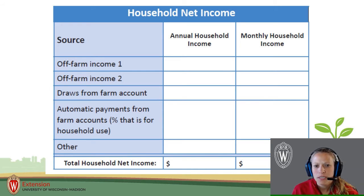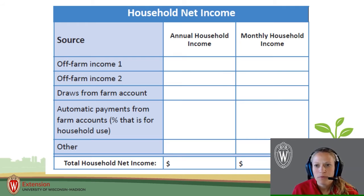Is there off-farm income that you are or will be receiving? Are there social security or investment payments that you are or will be receiving as additional income streams? Are you receiving or going to require a draw from the farm on a monthly or annual basis? Would that payment be irregular or regular, for example, as a land rental payment?